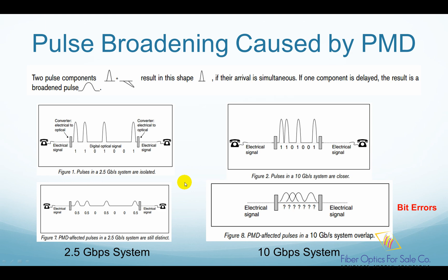Let's look at two high-speed fiber optic systems — one at a lower speed of 2.5 Gbps and the other at a much higher speed of 10 Gbps. They both have the same digital pulse input, shown as the top part: 1101-001. In the 2.5 Gbps system, these pulses are well separated in time since it has a slower speed. But in the 10 Gbps system, these pulses are much closer to each other in time. After the pulses travel a certain length of fiber which has PMD, in the 2.5 Gbps system the pulses are broadened in time and have a lower power peak, but they can still be distinguished as the original pulses: 1101-001.